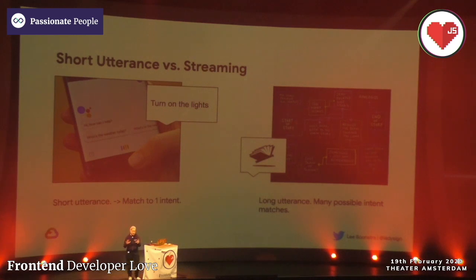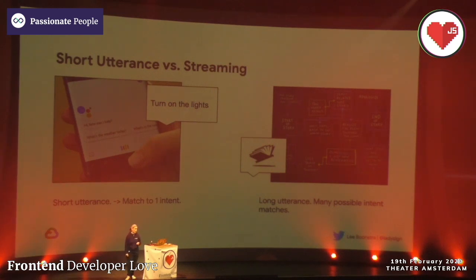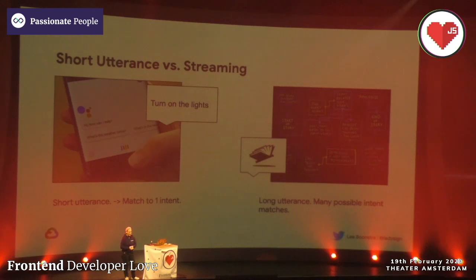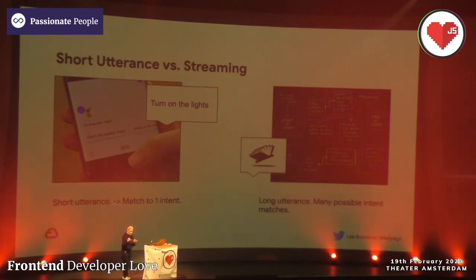It's technically a lot different from how the Google Assistant works, because with the Google Assistant you work with simple commands, simple utterances — like 'turn on the lights' or 'turn up the heat'. Whereas when you're building your own streaming API, maybe you want to keep the stream open and you can talk for 15 minutes.